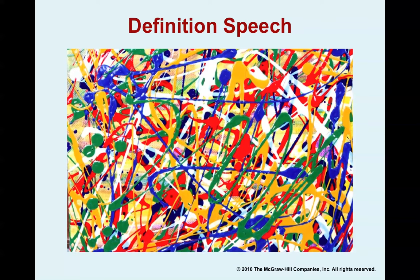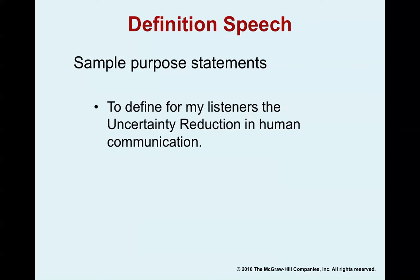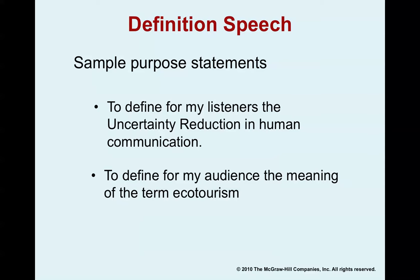There are many different types of informative speeches. The first type is a definition speech. Looking at the photo on your screen, this is actually an example of a drip painting — a technique invented by artist Jackson Pollock. A student gave a speech defining drip painting and discussing what made it different from other art techniques. A definition speech goes beyond just the dictionary definition and provides a detailed elaboration of a concept. For example, a sample purpose statement might be: 'to define for my listeners uncertainty reduction in human communication,' or 'to define for my audience the meaning of the term ecotourism.'